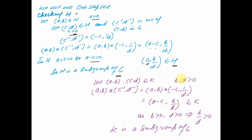Similarly checking K, which is the subset where b > 0. For (a,b) and (c,d) in K, b > 0 and d > 0. Using the same calculation, (a,b) * (-c, 1/d) = (a - c, b/d). Since b > 0 and d > 0, b/d is also positive, so the result belongs to K. By the one-step test, K is also a subgroup of G. I suggest you take these two problems and reverse the methods — the one solved by the one-step test, try with the two-step test, and vice versa.